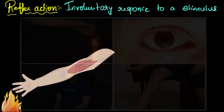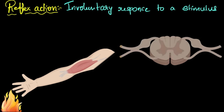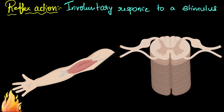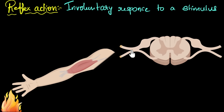So here is my arm. I have shown the bicep muscle over here because that will be important. In such a reflex action, it turns out that there are only three neurons involved — only three cells. And it involves our spinal cord. This is a section of the spinal cord, and these are the bundles of nerves coming out from the spinal cord.